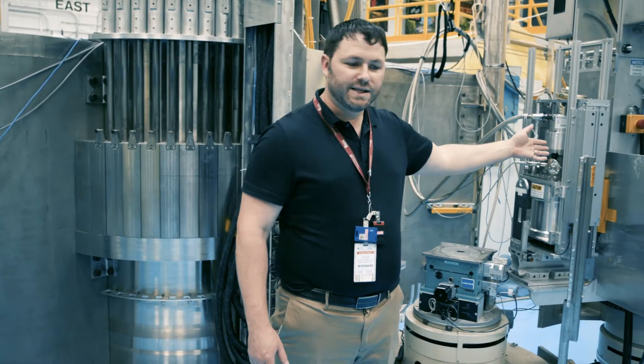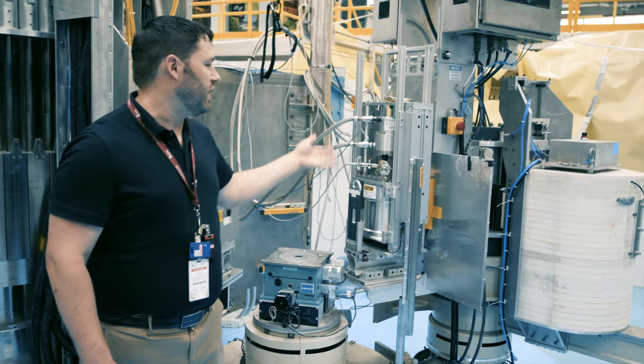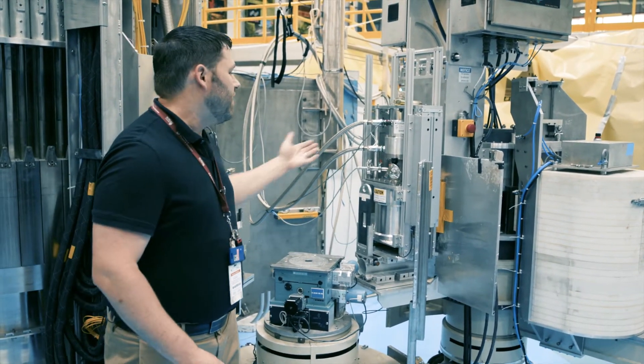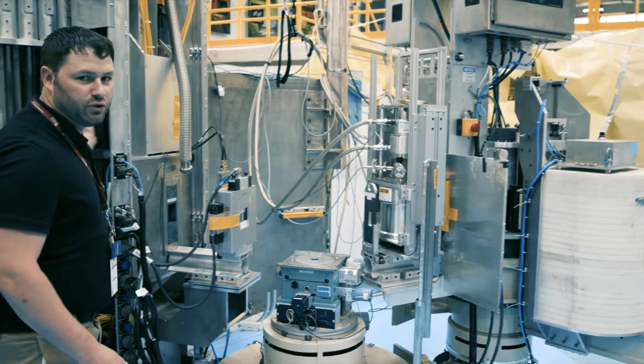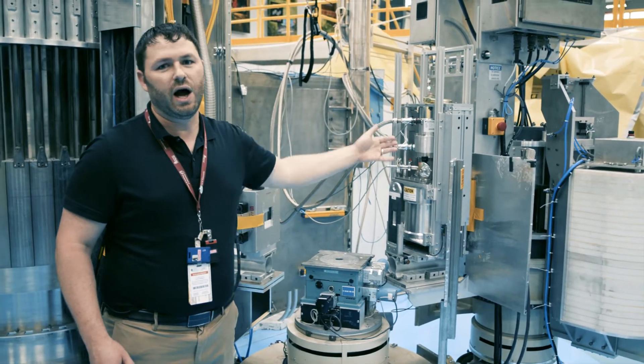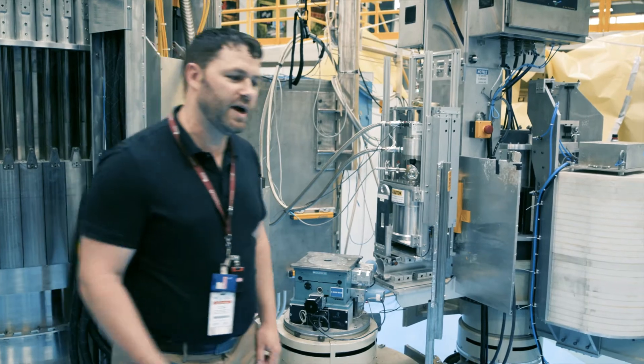The final axis is the analyzer, which is very similar to the monochromator. It works exactly the same way by selecting a single neutron energy that comes off the sample into the detector. So we can select a single neutron energy coming in, a single point in Q space, and a single energy coming out to select one point in momentum energy space that we want to measure.